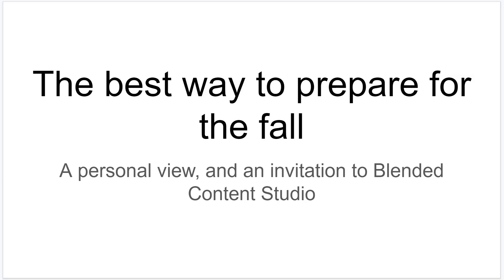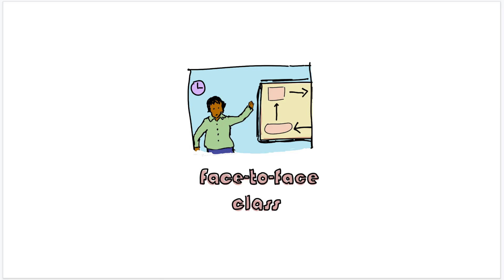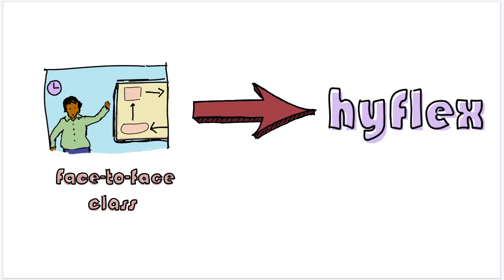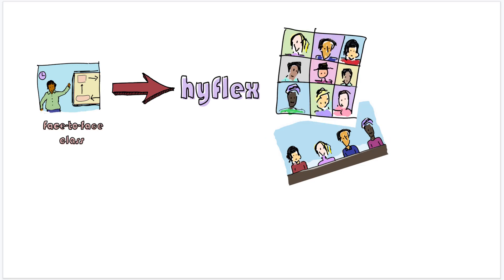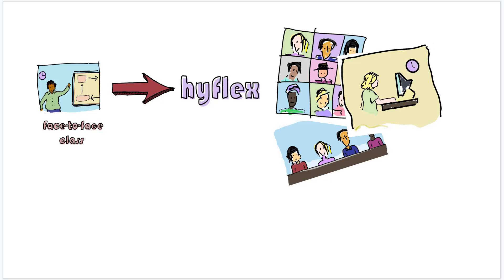First, let me talk about the way that people are thinking about approaching the fall that I think is the wrong way. The conception a lot of people have is you have a face-to-face class and you're going to have to do something called HyFlex — not necessarily as the method, but as a sort of universal concern. No matter what, you're going to have to serve in-class students, students connecting synchronously online, and students connecting asynchronously. And this idea that we're moving from a face-to-face class to HyFlex is probably the wrong way to approach it.